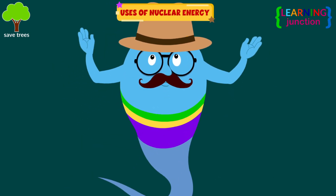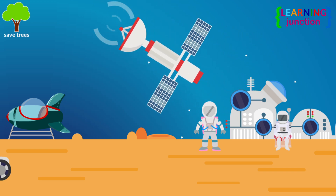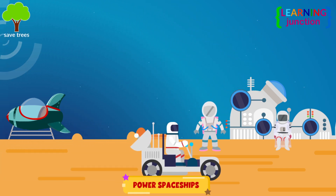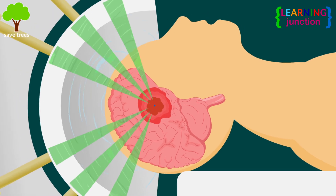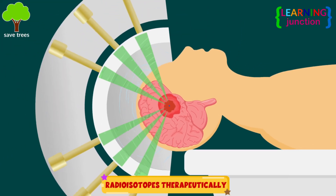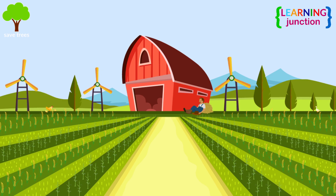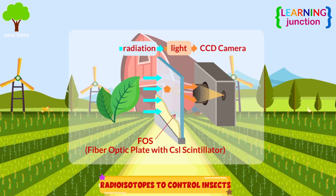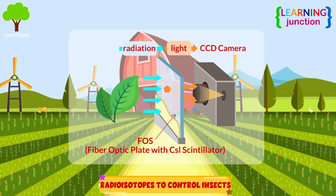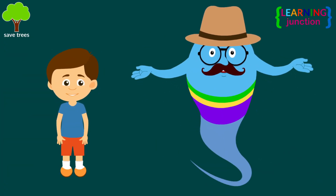Let's see some uses of nuclear energy. Nuclear energy sources are used to power spaceships in the extreme environments of deep space. Doctors also use radioisotopes therapeutically to kill cancerous tissue, reduce the size of tumors, and alleviate pain. Farmers use radioisotopes to control insects that destroy crops as an alternative to chemical pesticides.